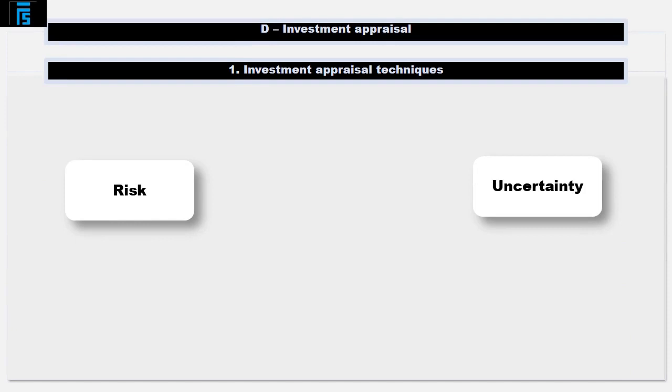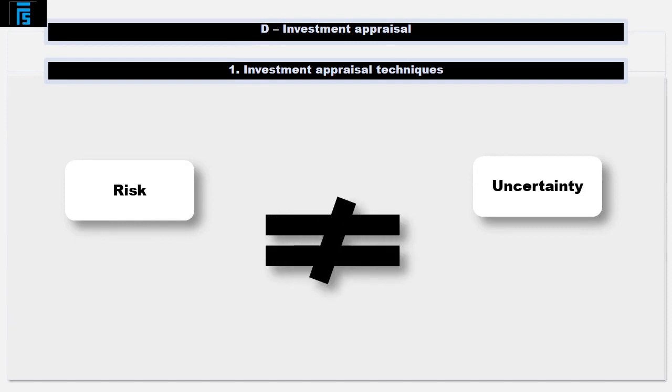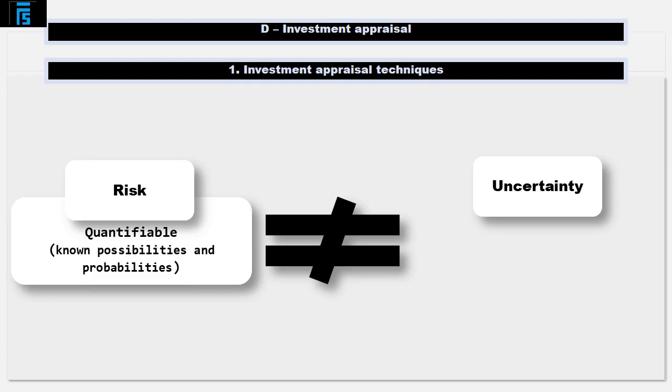Technically speaking, risk and uncertainty are different things. Risk is quantifiable. We're dealing with known possibilities and known or estimable probabilities. An example of risk would be tossing a coin.